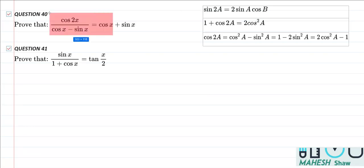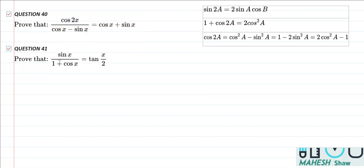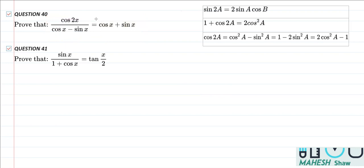In this video I'm going to solve two questions of trigonometric functions. In the first question we have cos 2x equal to cos 2x over cos x minus sin x, and what we have to prove is cos x plus sin x.